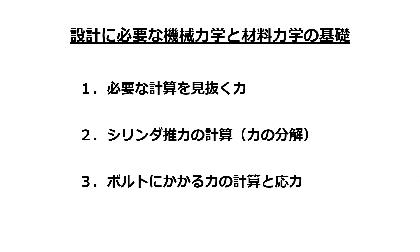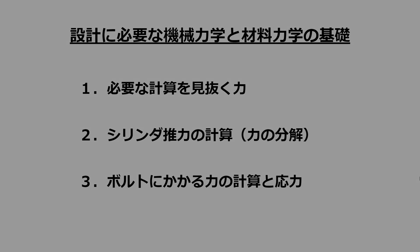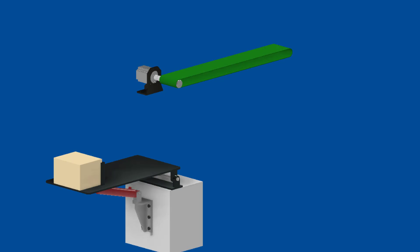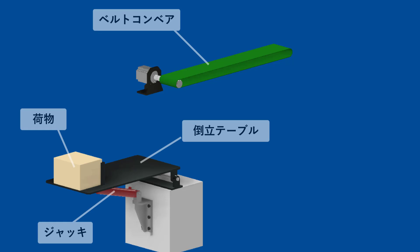今日はこの3つについて詳しく解説していきたいと思います。今日はこのような題材を用意しました。荷物の移載装置です。荷物をジャッキで持ち上げてベルトコンベアに移載する装置です。